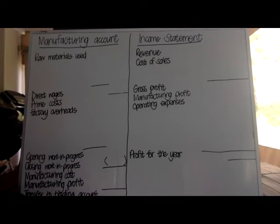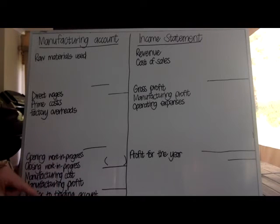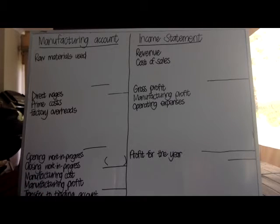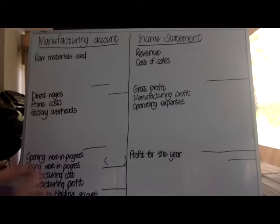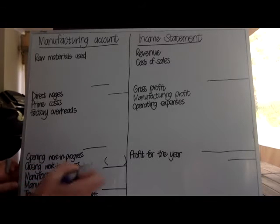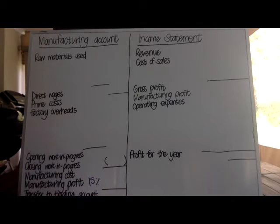Kemp's Limited is a company which manufactures a single product. Finished goods are transferred from the factory at production cost plus 15%. As soon as you see that they've told you the markup is 15%, I would go to my manufacturing profit at the bottom of my manufacturing account and make a note that it is 15%, so that I don't need to try to come back and look for the information later.